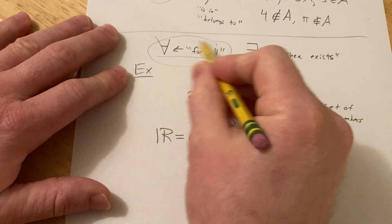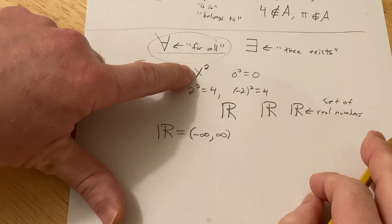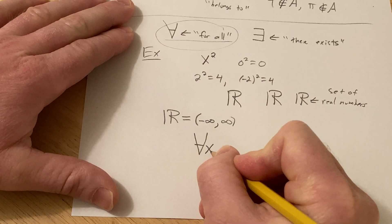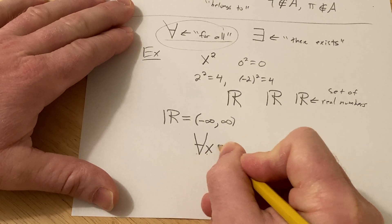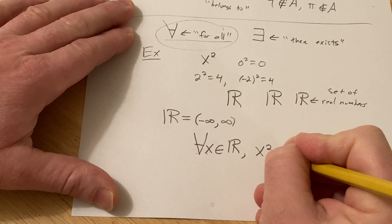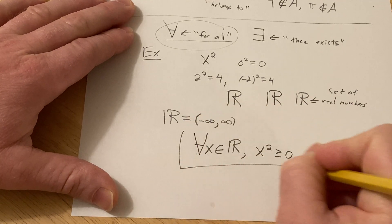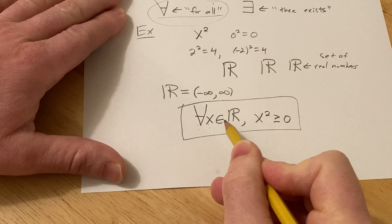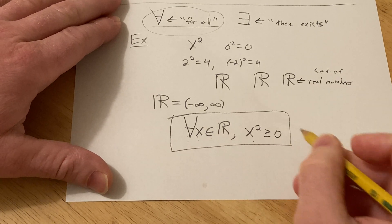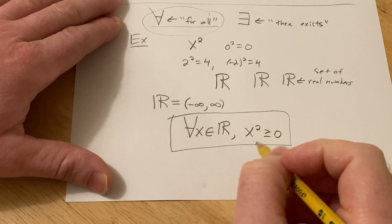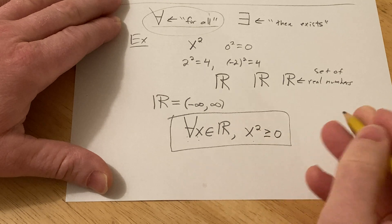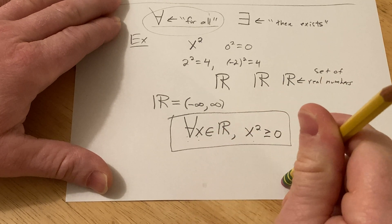So now let's use the 'for all' symbol to indicate that x squared is positive or zero for all x. You would say: for all x in the set of real numbers, x squared is greater than or equal to zero. That is a true statement — for every x in the set of real numbers, x squared is greater than or equal to zero. That's a way of using the 'for all' symbol.